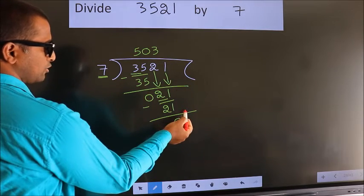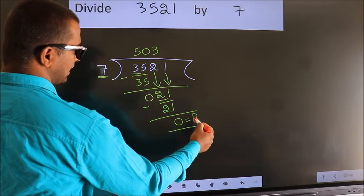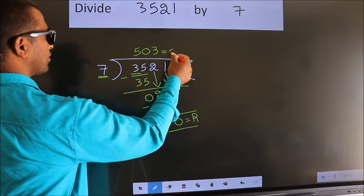No more numbers to bring it down. So, we stop here. This is our remainder. This is our quotient.